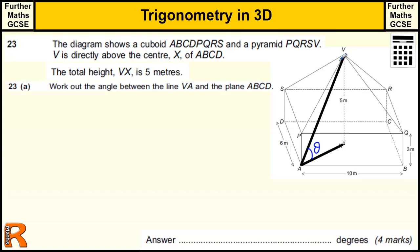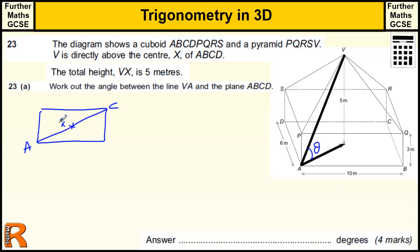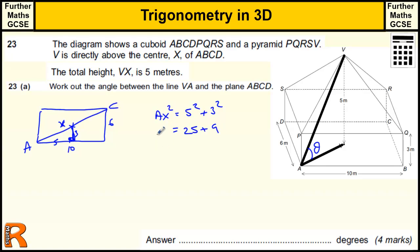To find theta, this bottom length is just half the diagonal of the base rectangle. So I'm going to work out A to X. Looking at the rectangle, A is the front corner and C is the back corner, so X is in the middle. We know the rectangle is 10 by 6, so we take a right-angled triangle of 5 by 3. Using Pythagoras: AX squared equals 5 squared plus 3 squared, so AX squared is 25 plus 9, and AX equals the square root of 34.